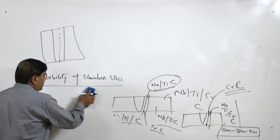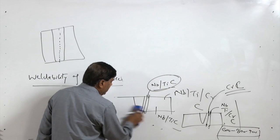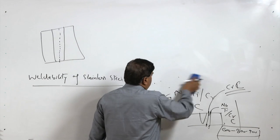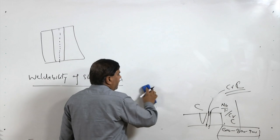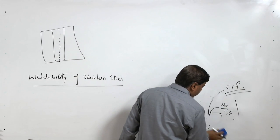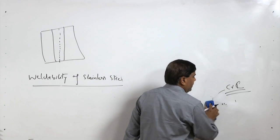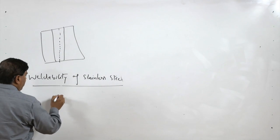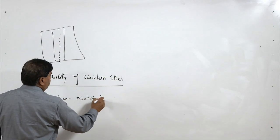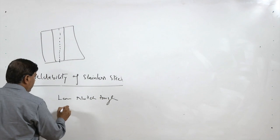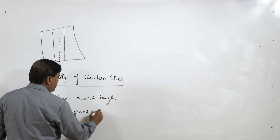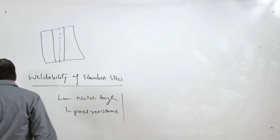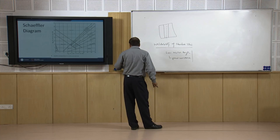The solution for knife line cracking is also the same: the system is reheated followed by rapid cooling so that everything gets dissolved and re-precipitation is avoided. Having low carbon content in the stainless steel is another method to avoid the problem associated with knife line cracking. Sigma phase formation is another problem encountered in high chromium austenitic stainless steel, and such intermetallic phases cause loss of notch toughness when they form in the heat affected zone.